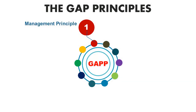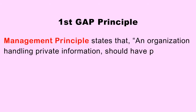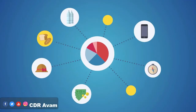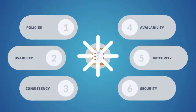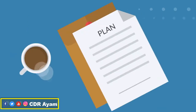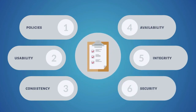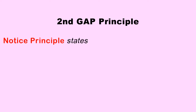The first principle is Management. The management principle states that an organization handling private information should have policies, procedures, and governance structure in place to protect the privacy of that information. Organizations like hospitals, social media platforms, and personal service-providing companies are expected to have these procedures, policies, and governance structures in place to protect the privacy of their clients' information.